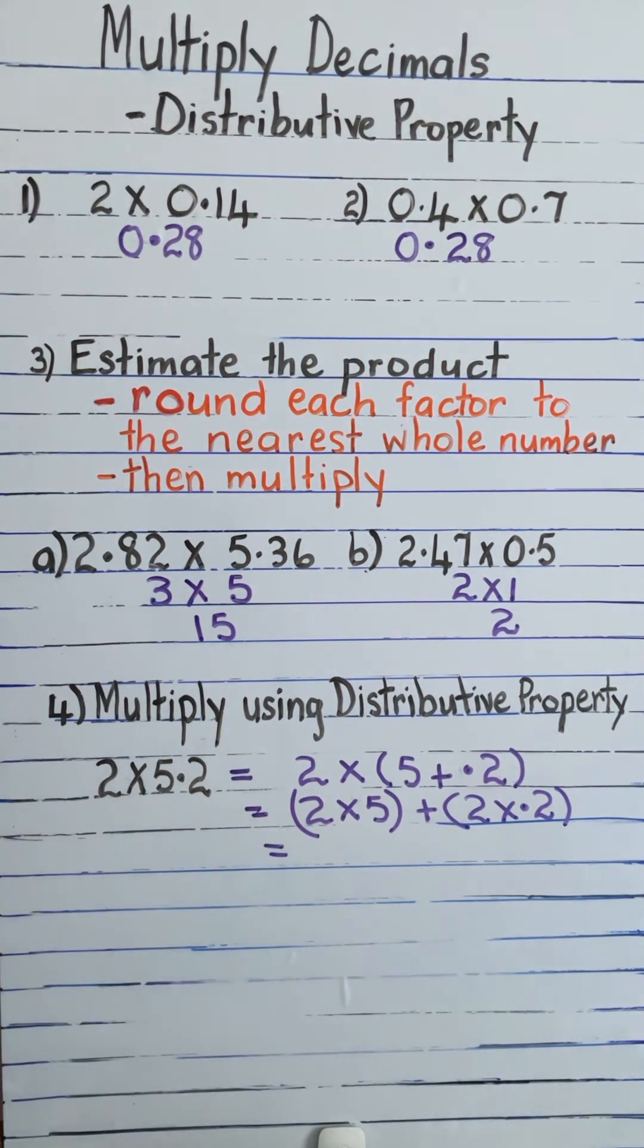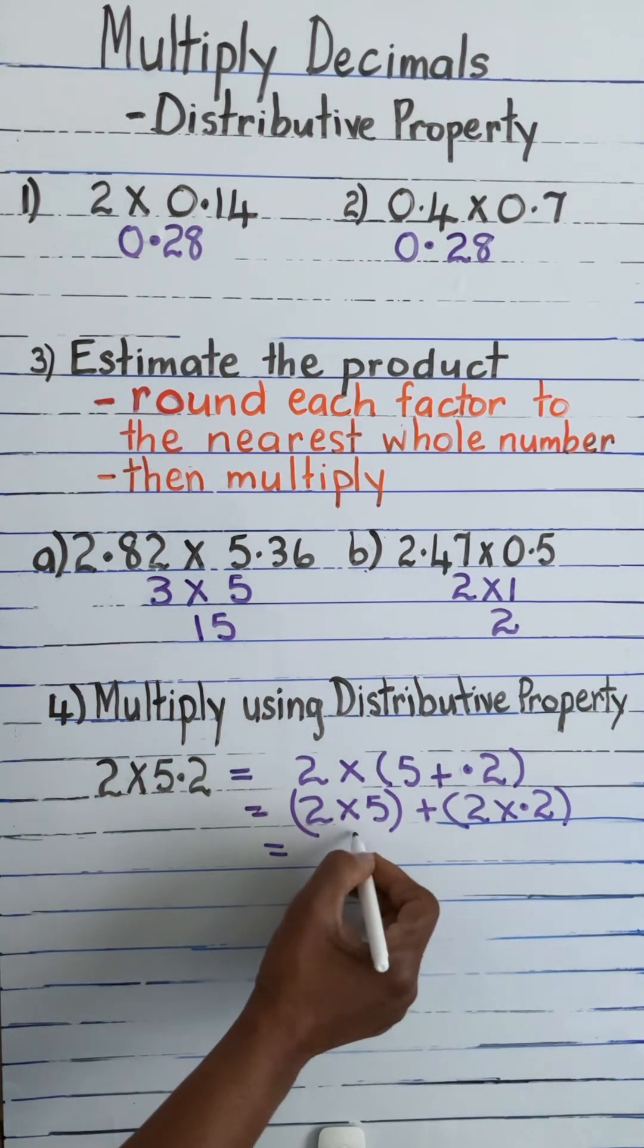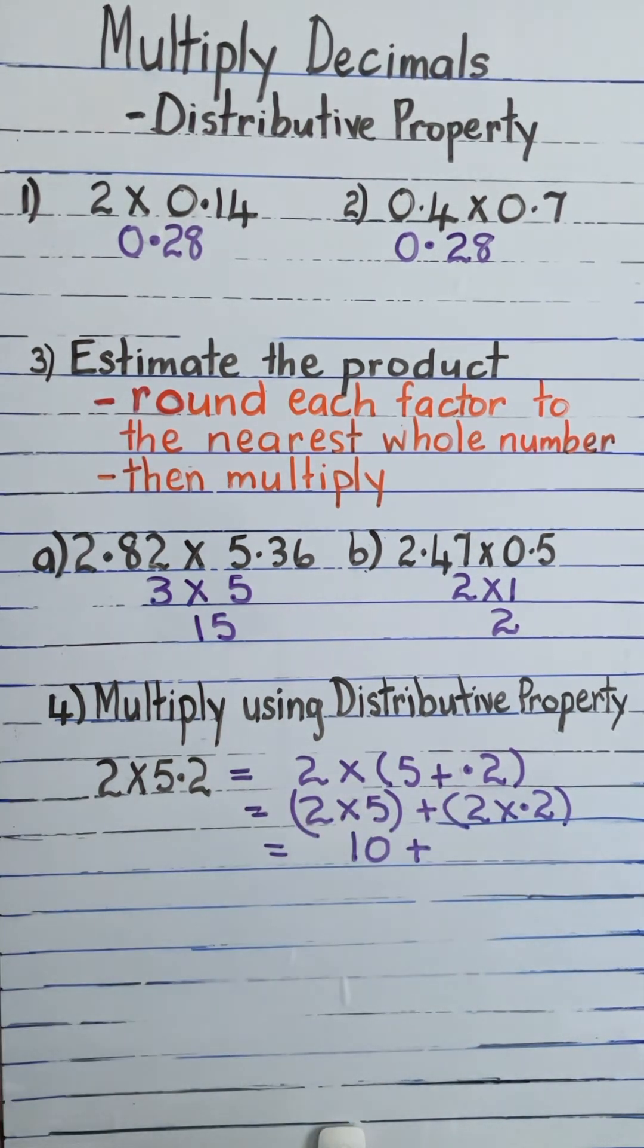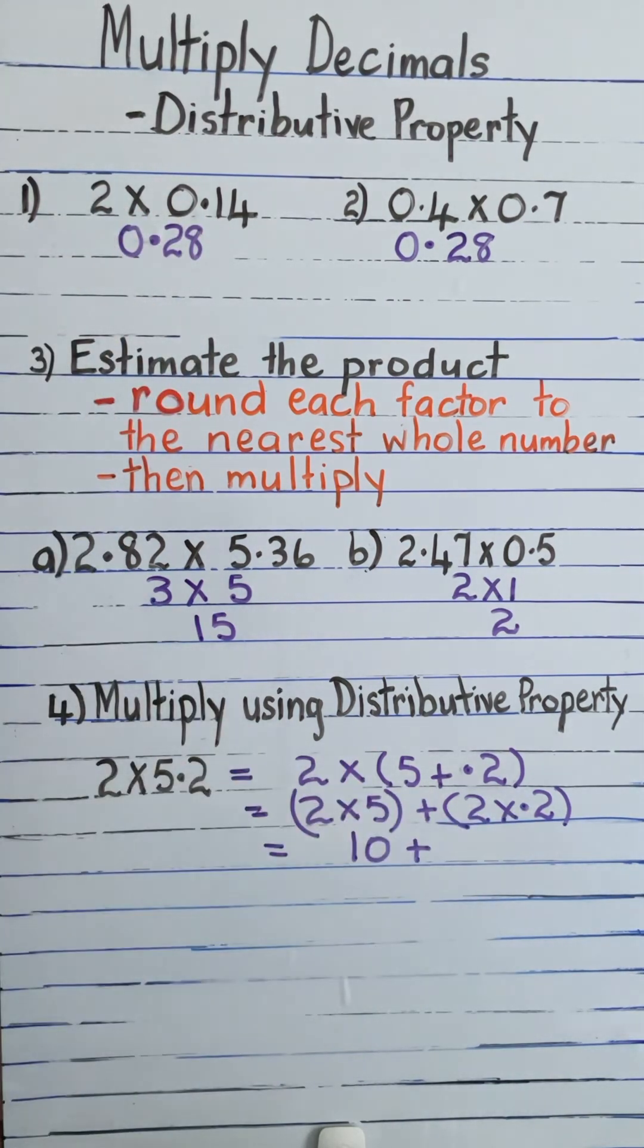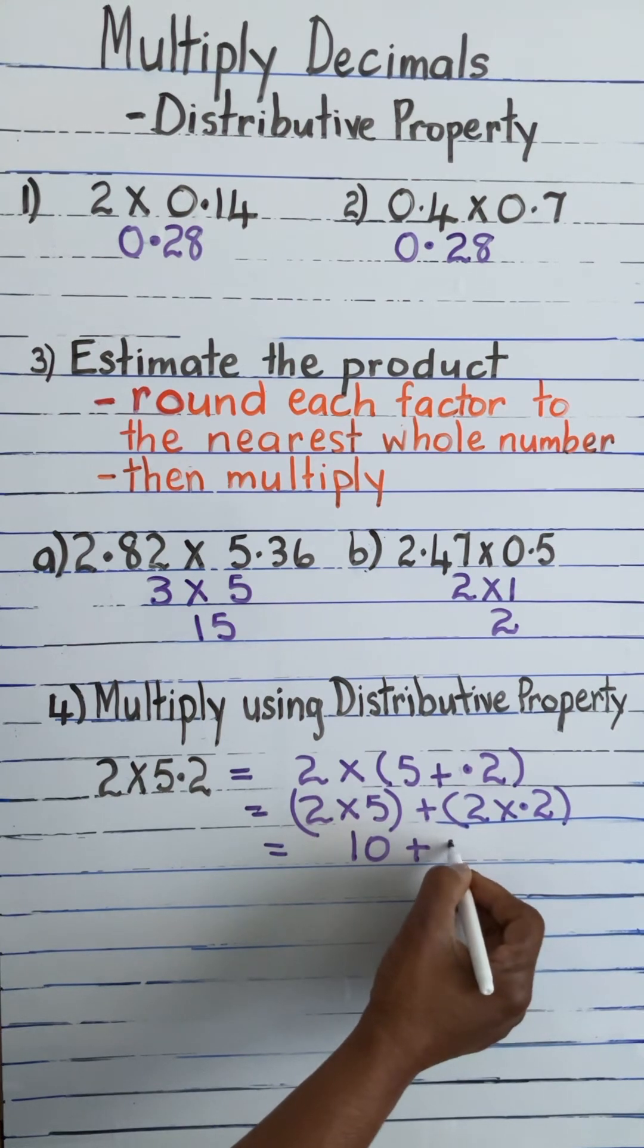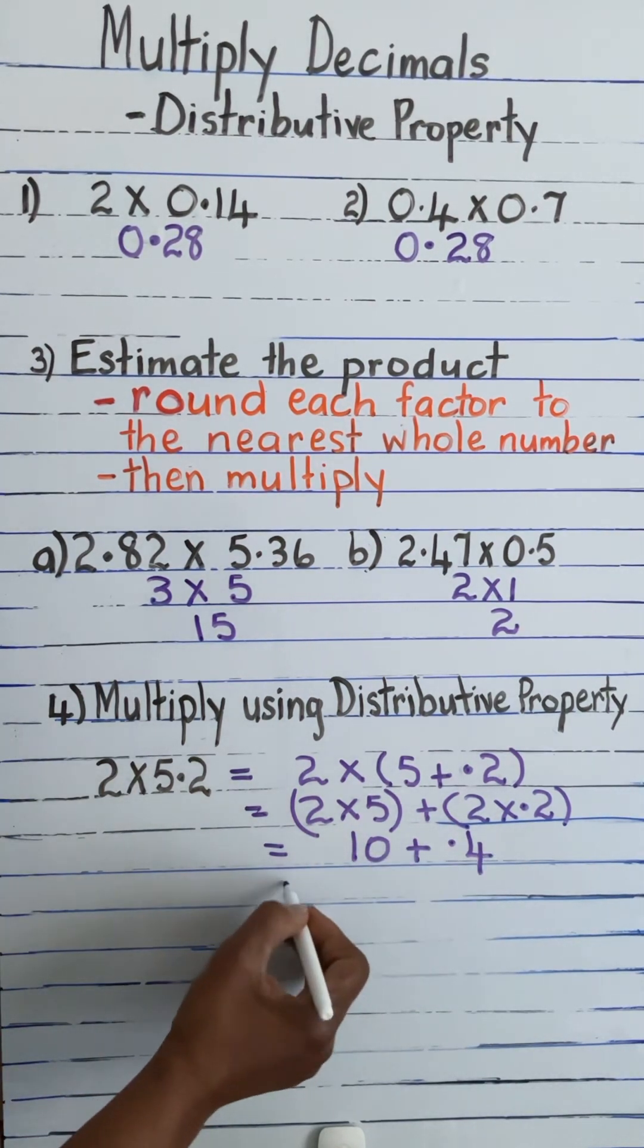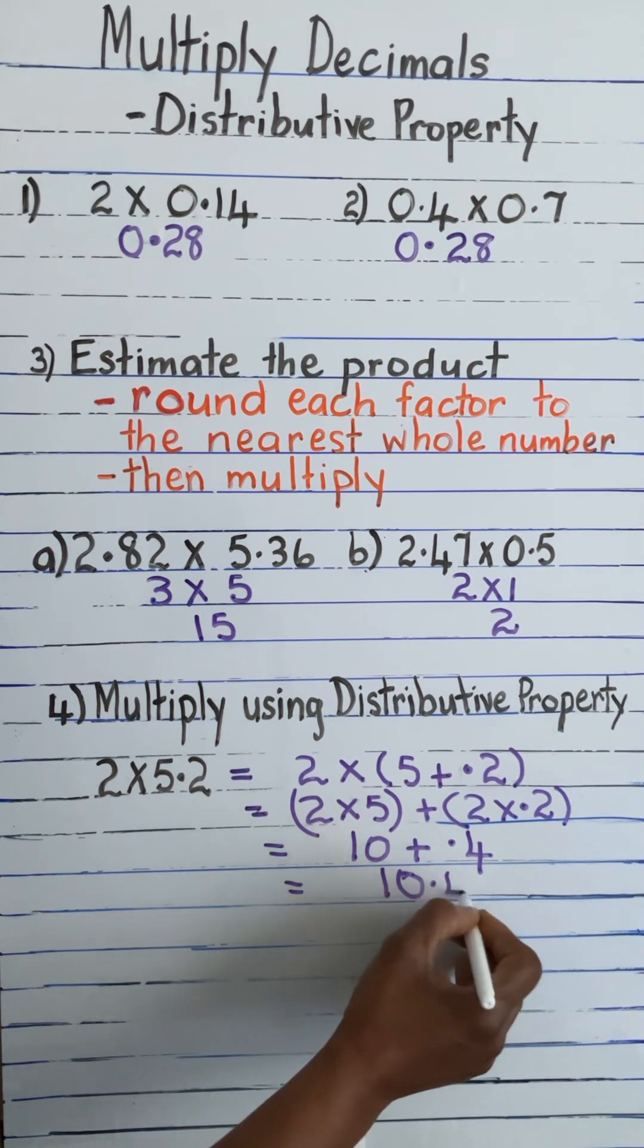Now we are going to simplify. 2 times 5 is 10, plus 2 times 0.2. Remember, here we multiply the numbers and then we fix the point. So 2 times 2 is 4, and it's one place of decimal, so it is 0.4. And we continue to simplify: 10 plus 0.4 is equal to 10.4.